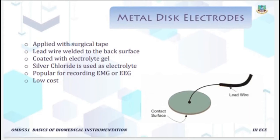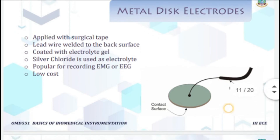The next type is the metal disc electrode, applied with a surgical tape. It is a circular plated electrode. The lead wire is connected to the back surface of the electrode, and it is also coated with electrolyte gel — normally silver chloride is used as the electrolyte. It is popular for recording EMG or EEG and the cost is very low compared to others.